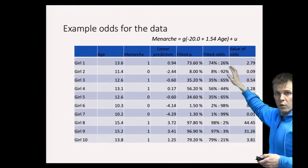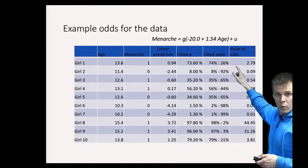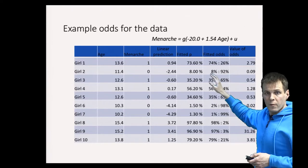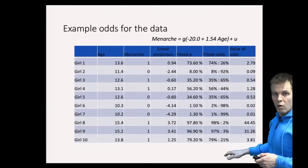So the odds for this first girl having had menarche is 74 to 26, which is 2.79. The odds for the second girl is 8 to 92, which is 0.09, and so on. So these are the odds.